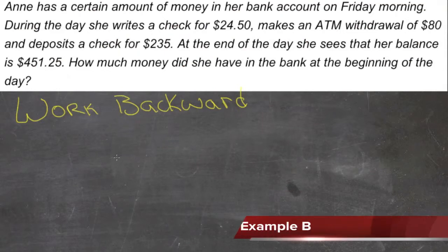Take a look at this word problem. Ann has a certain amount of money in her bank account on Friday morning. During the day, she writes a check for $24.50, makes an ATM withdrawal of $80, and deposits a check for $235. At the end of the day, she sees that her balance is $451.25. How much money did she have in the bank at the beginning of the day?